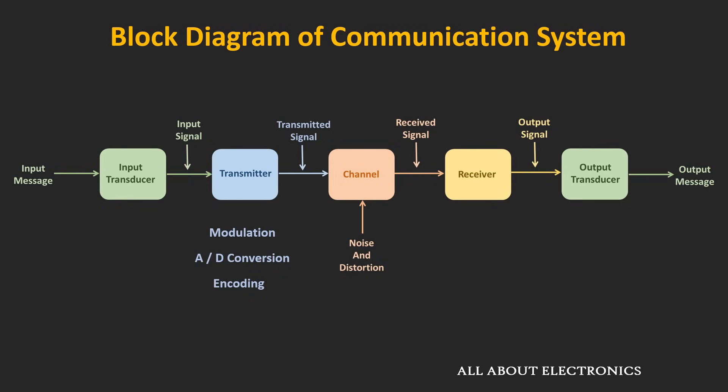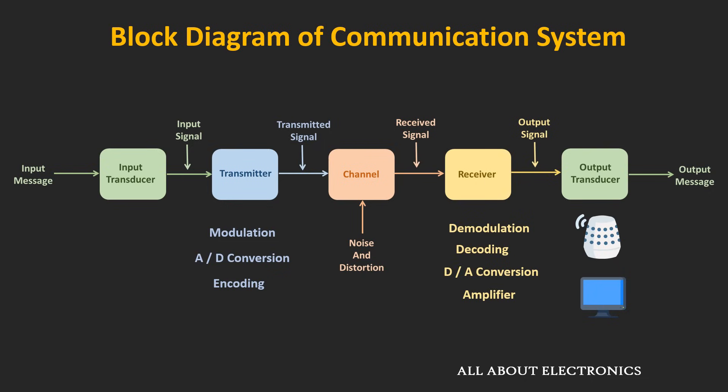At the receiver, the received signal is demodulated. If the signal is in digital form, it is first decoded and then converted into an analog signal using a digital-to-analog converter. After proper amplification, the signal is given to the output transducer, which could be a speaker or a display screen of a smartphone or monitor. This is the basic block diagram of the communication system and a brief overview of how information is transmitted from one point to another.